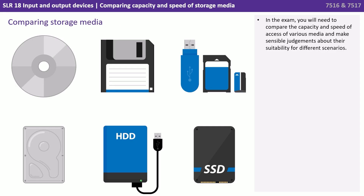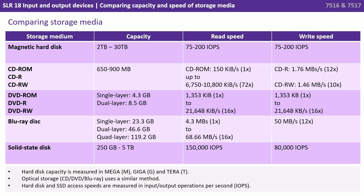In the exam you'll need to compare the capacity and speed of access of various media and make sensible judgements about their suitability for different scenarios. Here's a summary table. Note that hard disk capacity is measured in mega, giga and terabytes, and optical storage — CD, DVD and Blu-ray — uses a similar method. Hard disk and SSD access speeds are measured in input/output operations per second, or IOPS.